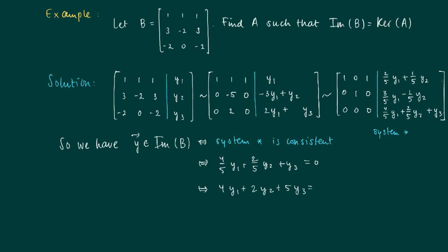Or if you write it down, we can find a matrix [4, 2, 5] times the vector y should be equal to 0.